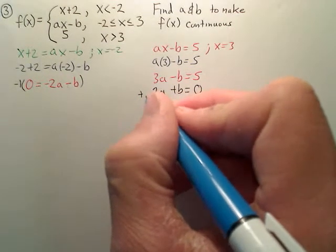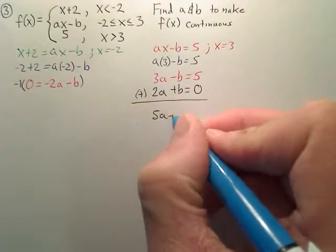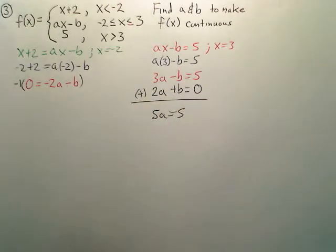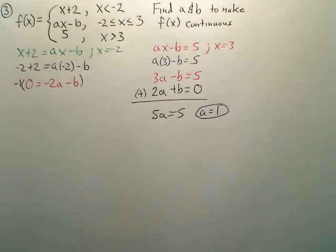Now I'm going to add straight down. When I do that, those cancel, I get 5a equals 5, and a equals 1. There's part of my answer.